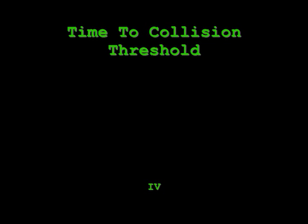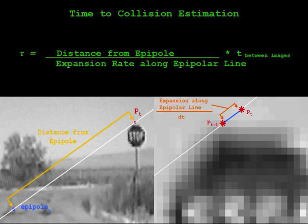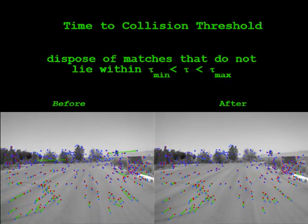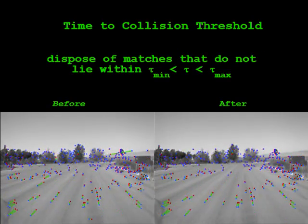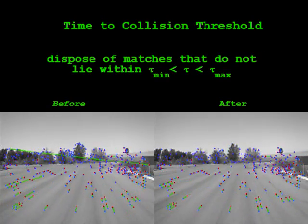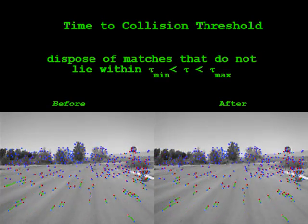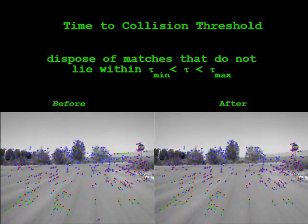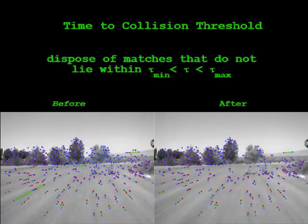Further outlier rejection is accomplished through a time-to-collision threshold. The time to collision of each sparse feature is computed by measuring its position and expansion rate relative to the focus of expansion. Correspondences with estimates not within a certain range are regarded as outliers.